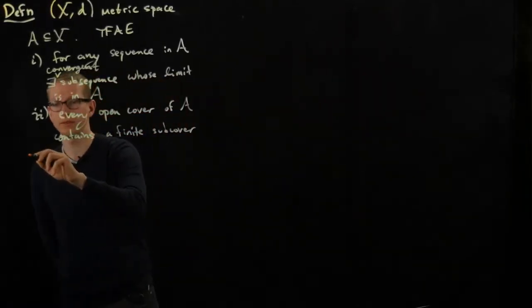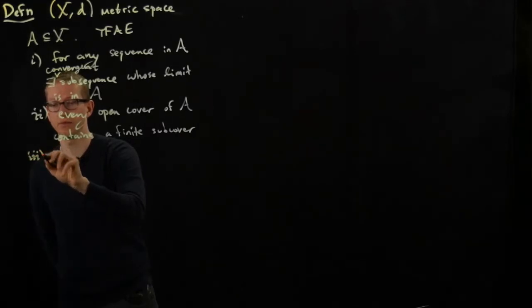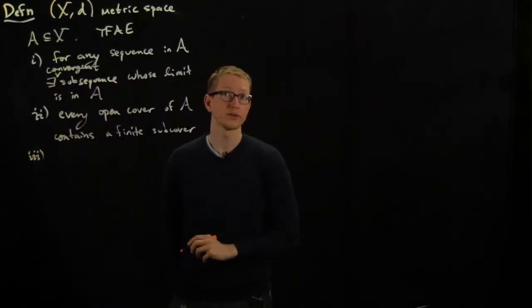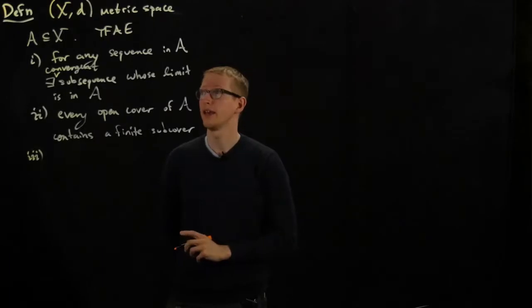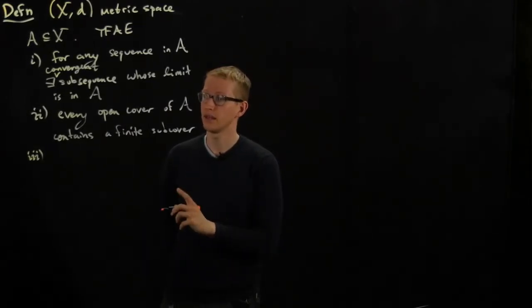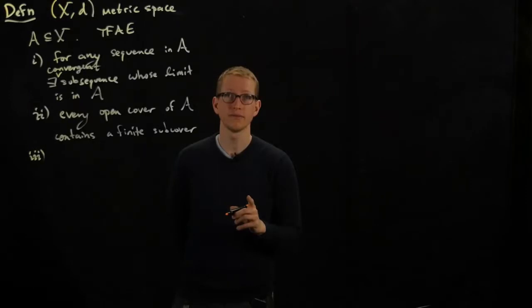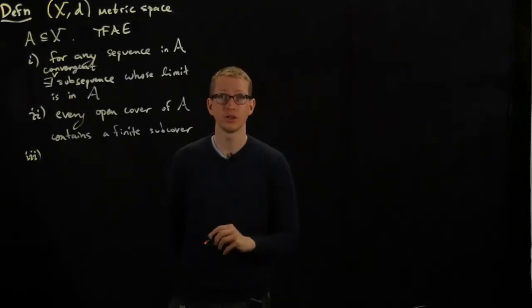And from that theorem, from those times, we also had a third characterization that said a subset of Euclidean space is compact if and only if it's bounded and closed.